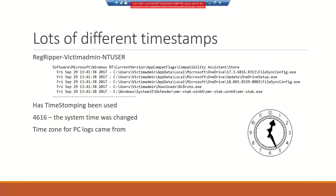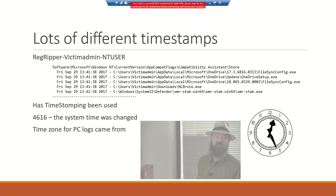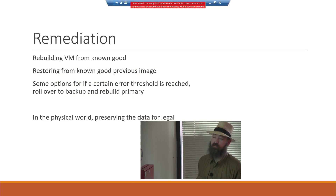Timestamp notes: event 4616 tells you if the time zone was changed. If you're working across the world, remember most logs come in local machine time zone. With PowerShell or Python you can pull local machine time and auto-correct it to GMT or Zulu.